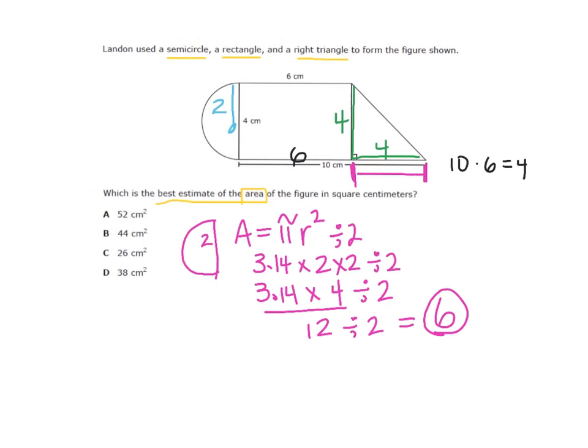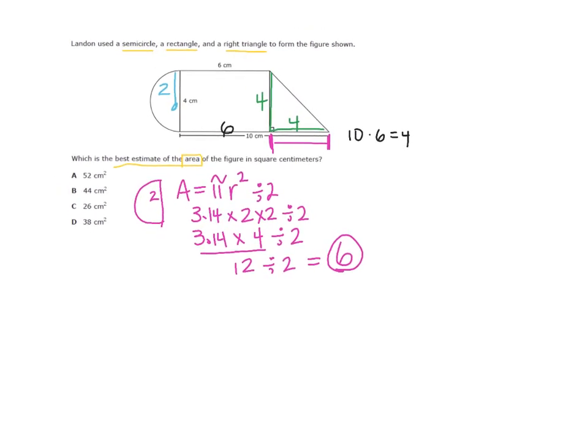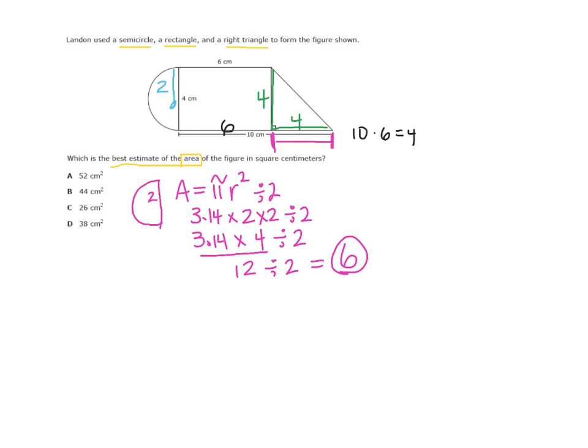The next shape is the rectangle. Rectangle should be super easy. My rectangle has the dimensions of 4 for the side and 6 for the top, so to find area you just do length times width: 4 times 6, that is 24. Right now I have 6 plus 24, and then last I need to do the triangle.